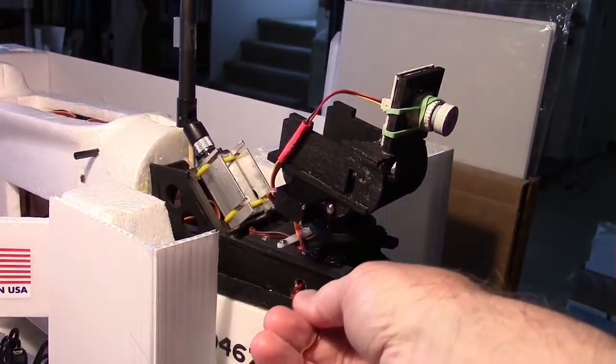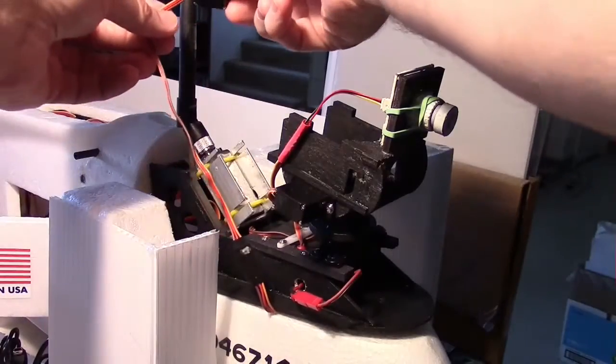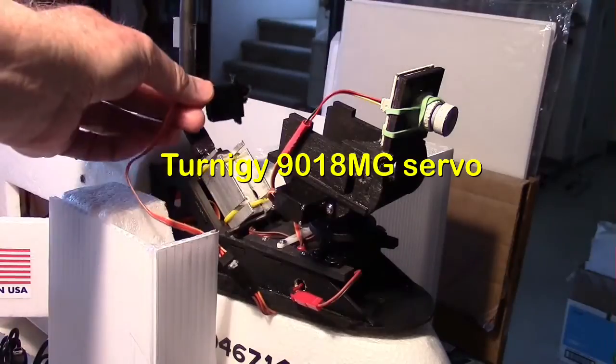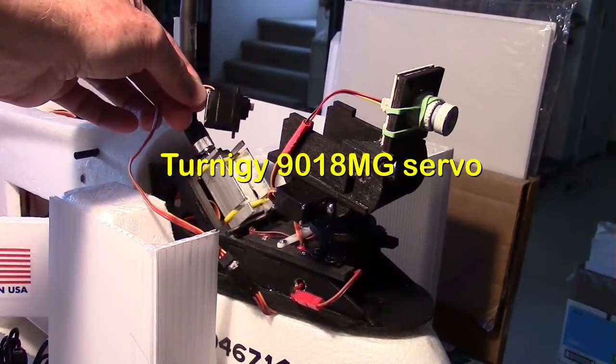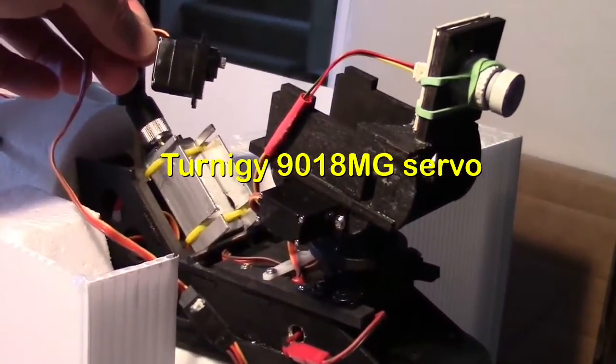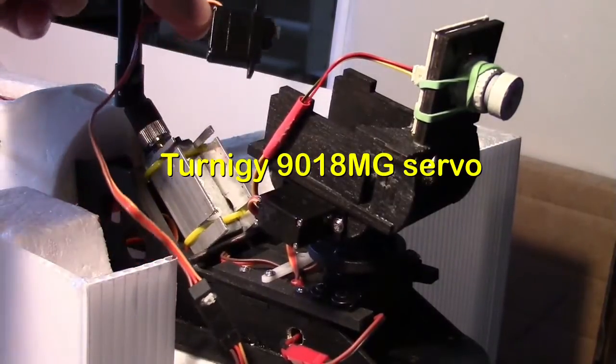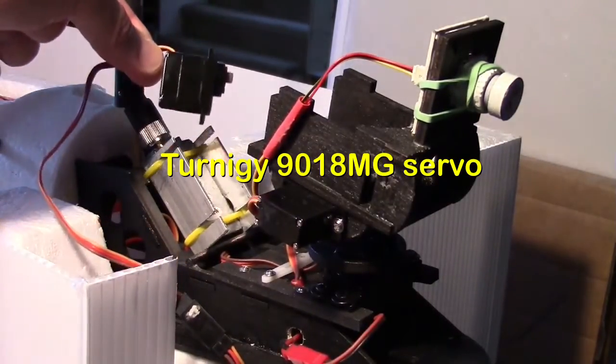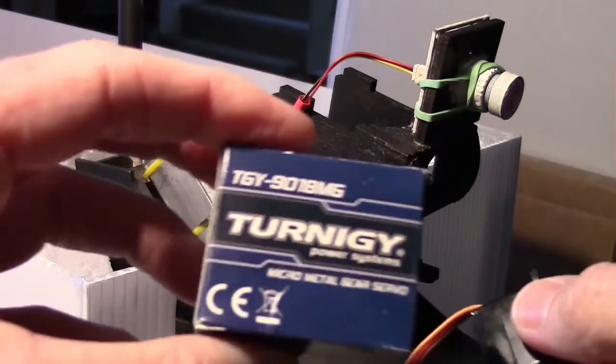This is the Turnigy 9018 Metal Gear servo. When I hold it up against the antenna, hear that chatter? You can even see it wiggling right there. When I get it near the antenna, chattering away. That's this one right here.